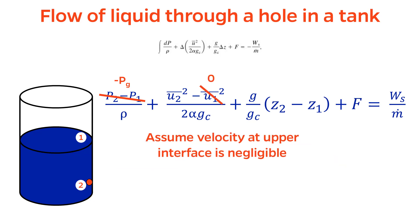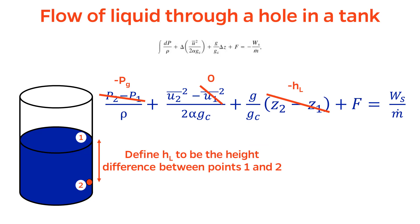Next, although the fluid at the upper interface is moving downward as the tank drains, we will assume that the velocity is negligible compared to the exit velocity. We'll also define the height difference between the top interface and the hole to be HL. Keep in mind that HL depends on time, and we'll come back to this in a moment.